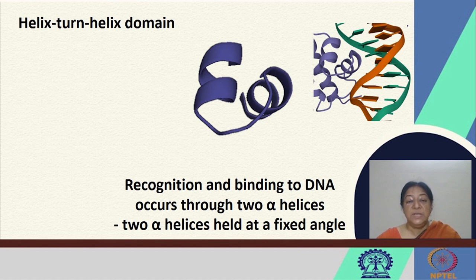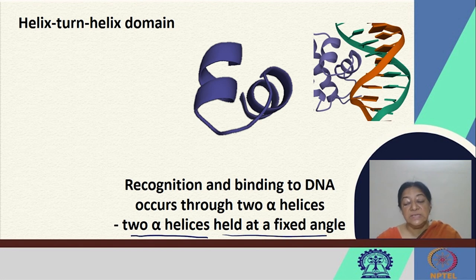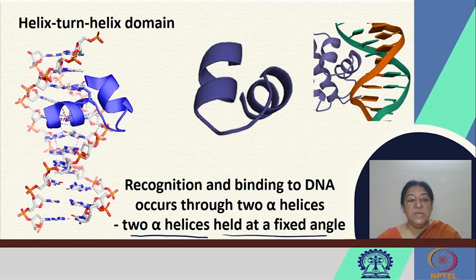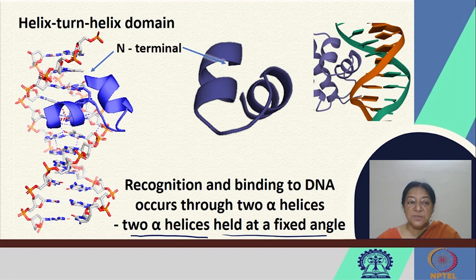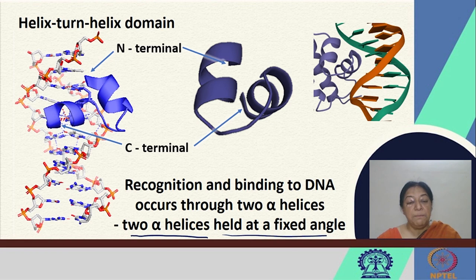The recognition and binding to DNA occurs through these two helices. Interestingly, the two alpha helices are held at a fixed angle to facilitate the geometrical interaction with the DNA molecule. So we have the specific angle, specific recognition, and specific structural characteristics that allow the DNA to interact with this DNA binding domain. The recognition and binding occurs in the major groove in a manner where the two alpha helices are held at a specific angle.